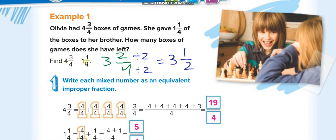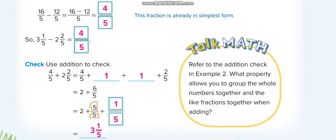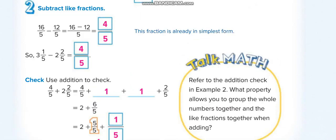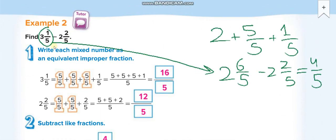You can follow the direct method — subtract the whole numbers first, then the fractions. While subtracting the fractions, keep this in mind: we never subtract the denominators. The denominators always stay the same.